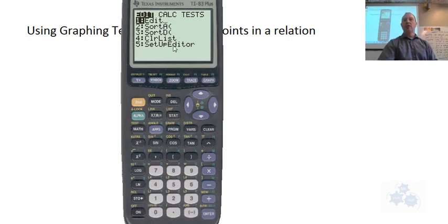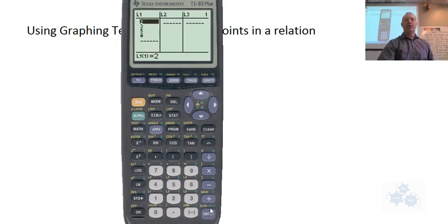If you get behind or you miss a step or if something's not working in your calculator, just go ahead and throw up your hand. We'll pause it and help you with that. But what we need to do is get to the list menu. So hit stat and then this edit is number one. Push enter. You should have a screen that looks like this.